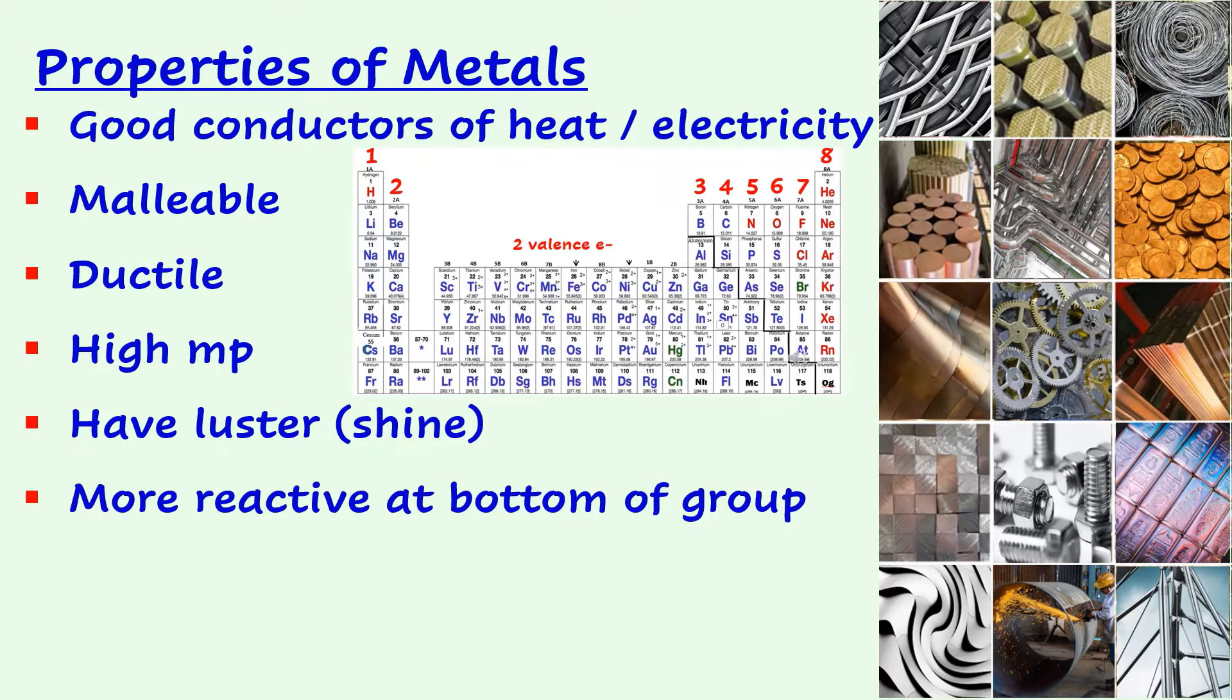Since metals are located to the left of the zigzag line, they tend to have one, two, or three valence electrons, making their outer shells less than half full. It's easier for these atoms to lose their outer electrons rather than struggle to gain enough electrons to make a complete outer shell of eight.